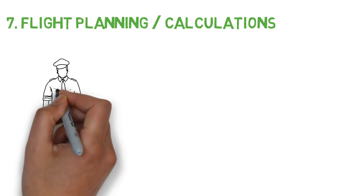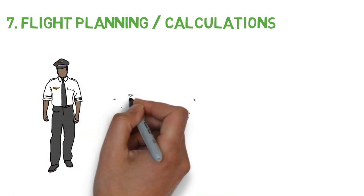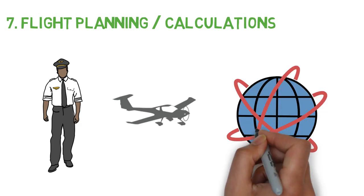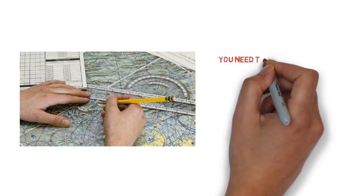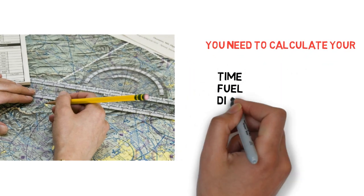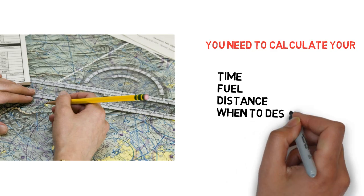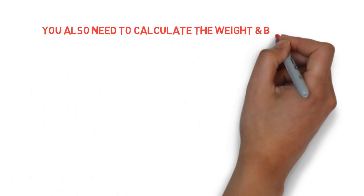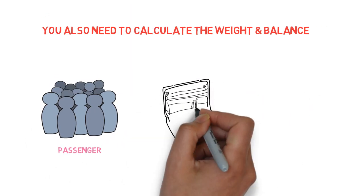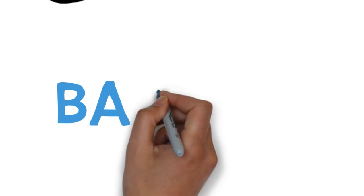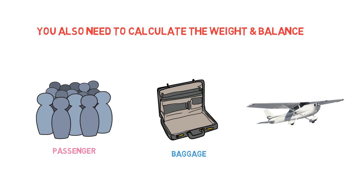Number seven, flight planning and calculations. As a pilot, you need to calculate your time, your route, your fuel to go to your destination, and you need to plan. You need to calculate time, fuel, distance, when to descend, and things like that. This is where the math comes into play. You also need to calculate your weight—know your passenger's weight and your baggage. Everything in the airplane, where you put it, has an effect on it because where your center of gravity is is very important.